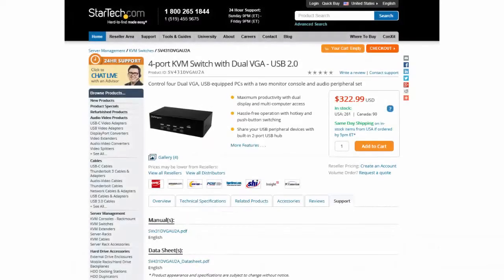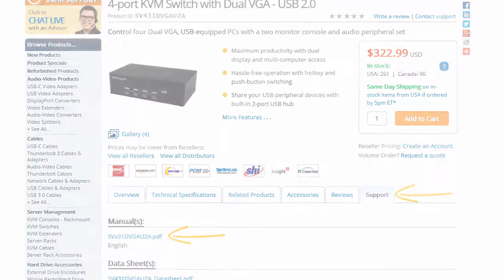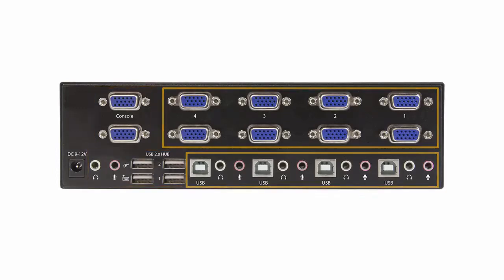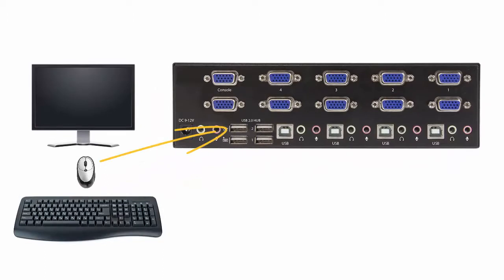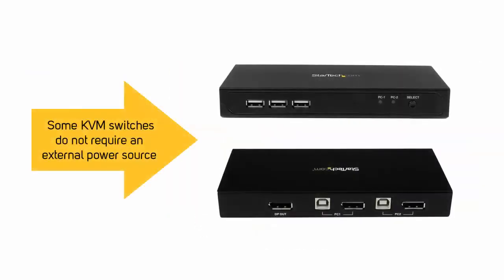Refer to the manual for a given KVM switch for more information. In general, the back of a KVM switch will have a section for console ports and a section for each computer to be controlled. The console ports are for plugging in your mouse, keyboard, and display or displays, as well as audio and USB peripherals if supported. Some KVM switches will also power themselves off of the video and USB connections to the computers and do not require a power adapter.